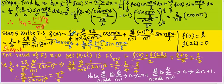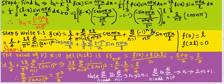This becomes L/4 plus 2L/π² times sigma. Here n is changed from odd values to n = 1 to infinity by replacing n with (2n minus 1), so n² is replaced by (2n−1)². The series becomes sigma n = 1 to infinity of cos((2n−1)πx/L)/(2n−1)², plus L/π times sigma n = 1 to infinity of (−1)ⁿ/n·sin(nπx/L).